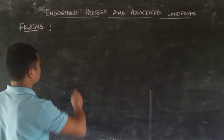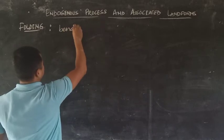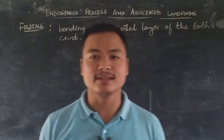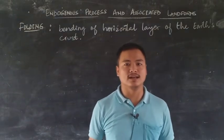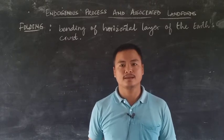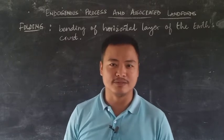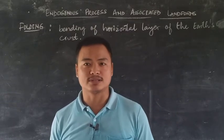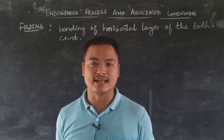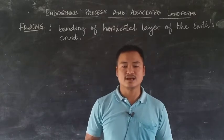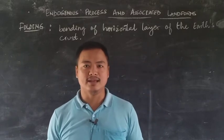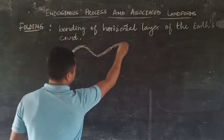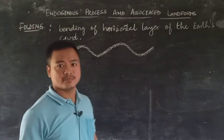Due to compression forces, the earth's crust bends. So folding is the bending of horizontal layers of the earth's crust. The crust is the ground beneath us where we stand — mostly formed of rocks and minerals. When force is applied to these rocks or landforms, they bend, and this is known as a fold.